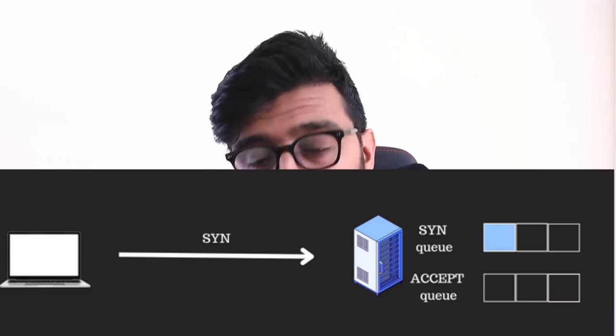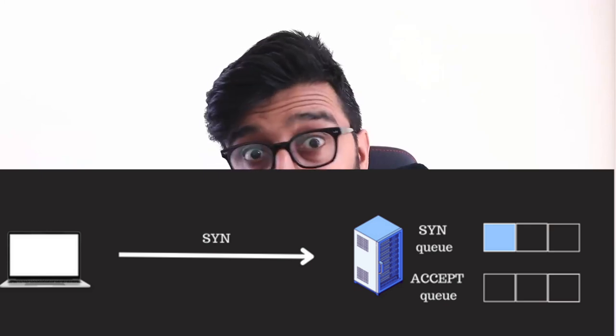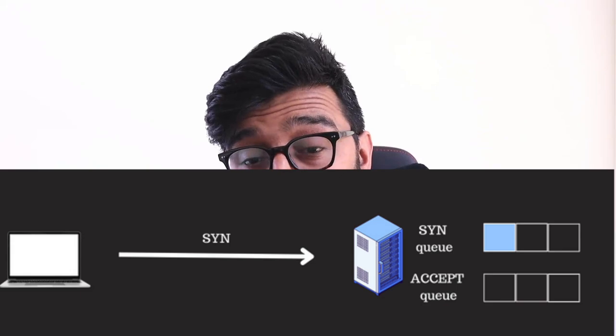When we create a listening socket in a process, we specify the IP address and the port, and we get back a listening socket — which in Linux is basically a file descriptor, because in Linux everything is a file. When we do that, the Linux kernel creates two queues for that listening socket: one is called the SYN queue and one is called the accept queue.